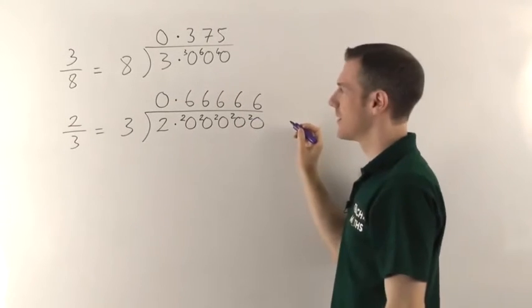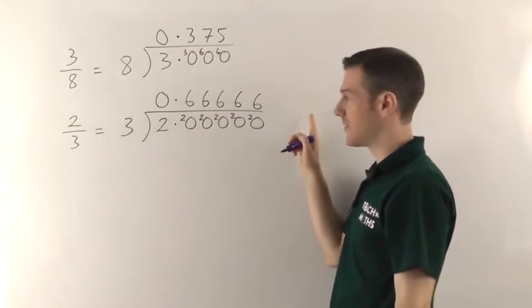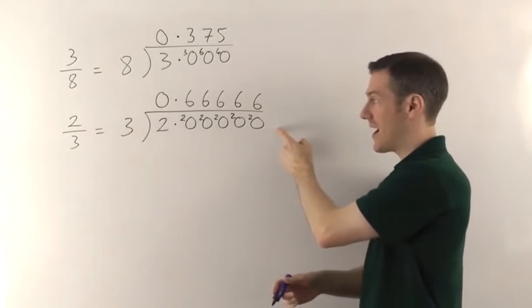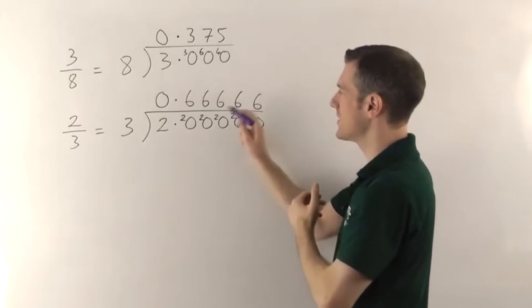So in fact the 6s here are going to go on forever because these zeros, 2 is just 2.0000 and the zeros go on forever. You can have as many zeros as you like and this is never going to end. It's always going to go in 6 times remainder 2.